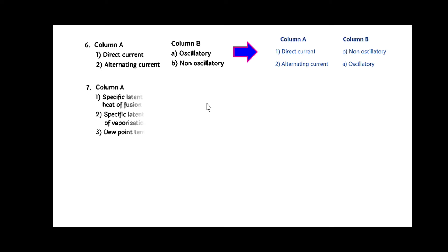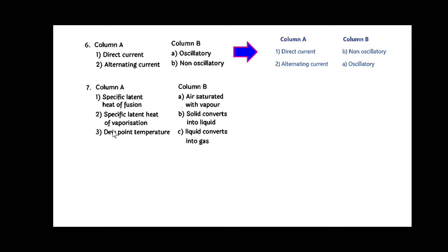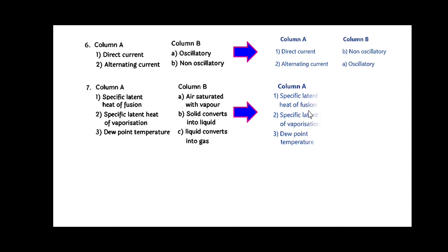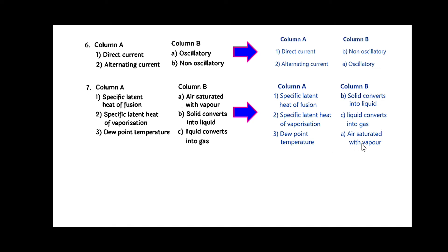Seven: column A gives specific latent heat of fusion and specific latent heat of vaporization. The answer is: specific latent heat of fusion — solid converts into liquid; specific latent heat of vaporization — liquid converts into gas. Also, dew point temperature is when air is saturated with vapor.